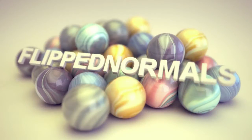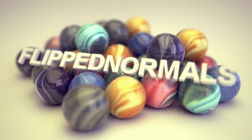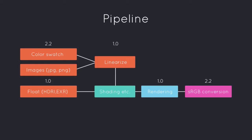So when we import our textures into our 3D package and render, we end up with a result like this. In order to combat this we have to make sure that we linearize our textures, and most 3D packages allow you to do this internally. When we render again we end up with our correct looking image with nice light — our textures aren't washed out and everything is great. To simplify it, here's a pipeline chart. Floating point images — HDRIs and EXRs — are already linear with a gamma of 1. But color swatches inside your software and images that you import need to be linearized; their gamma in the beginning is 2.2 and we need to linearize it to make the gamma 1.0. Then you can pipe that into your pipeline — start your shading, your lighting, which is already linear. Everything internally in your 3D package already works linearly.